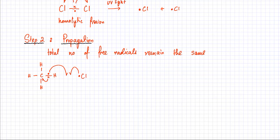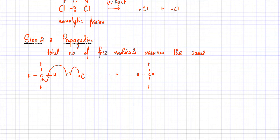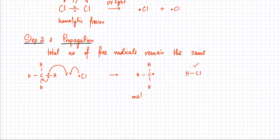The products formed are CH3, which now forms a radical because it has lost the hydrogen atom bonded to it. Since it was a homolytic fission, it has one unpaired electron. The hydrogen goes and bonds with chlorine to form HCl — their bonds are now complete, so they're no longer free radicals. A methyl radical is formed. Initially we had a chlorine radical; now we have a methyl radical, but the total number of free radicals remains constant.